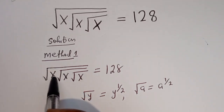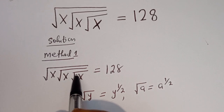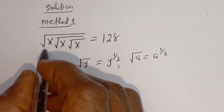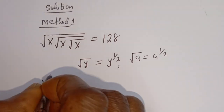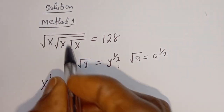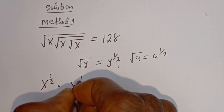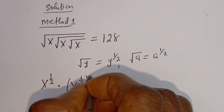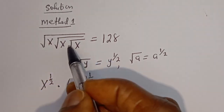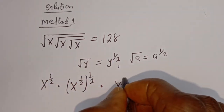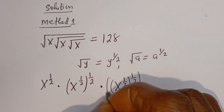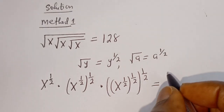Here we have the first square root of s, the second square root of s, and the third square root of s. The first square root of s is s to the power of 1/2, multiplied by s to the power of 1/2 to the power of 1/2, multiplied by s to the power of 1/2 to the power of 1/2 to the power of 1/2, all equal to 128.